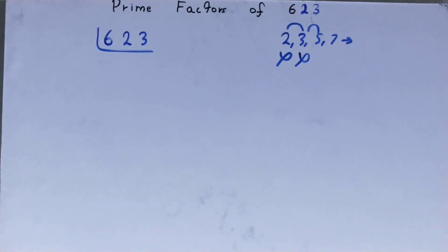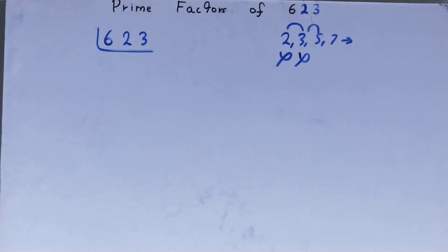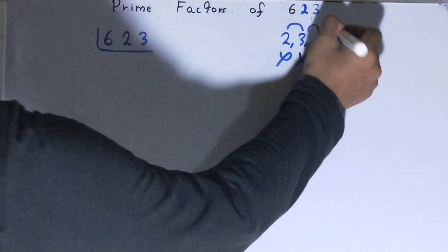Now is the number 623 divisible by 5? The answer is no, because the last digit is neither 5 nor 0, so it is also not divisible by 5.